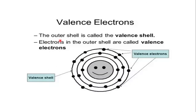We have a special name for the outer shell, which is called the valence shell. Because this valence shell is far from the nucleus, it experiences the least force of attraction between the protons and the electrons compared to shells closer to the nucleus. So the last shell is capable of taking part in chemical reactions, and the electrons present in the outer shell are called valence electrons because they are the ones which take part in chemical reactions.